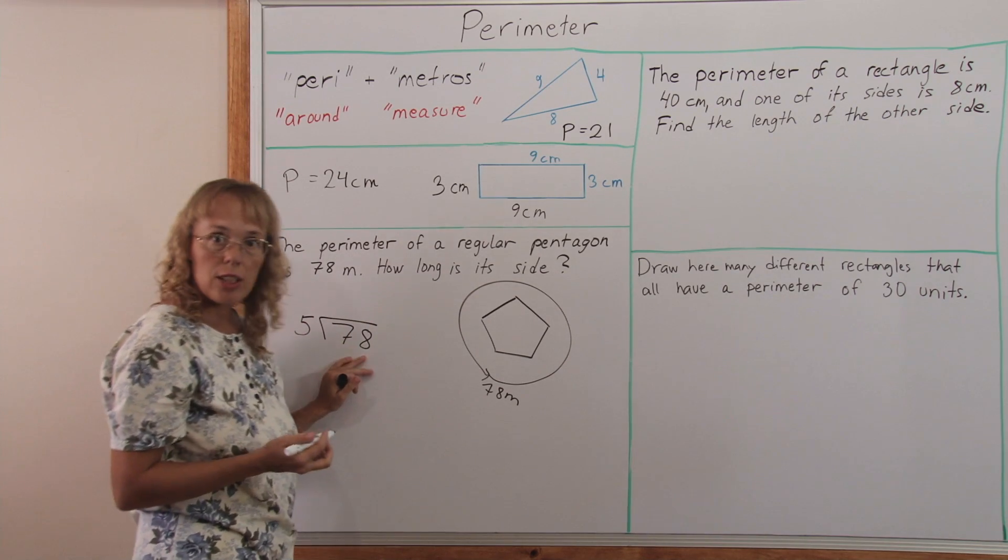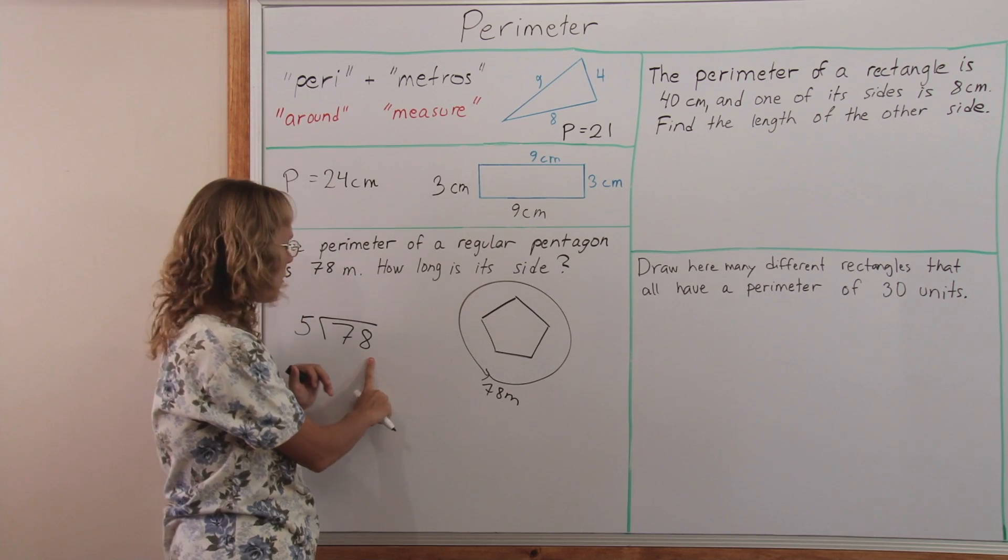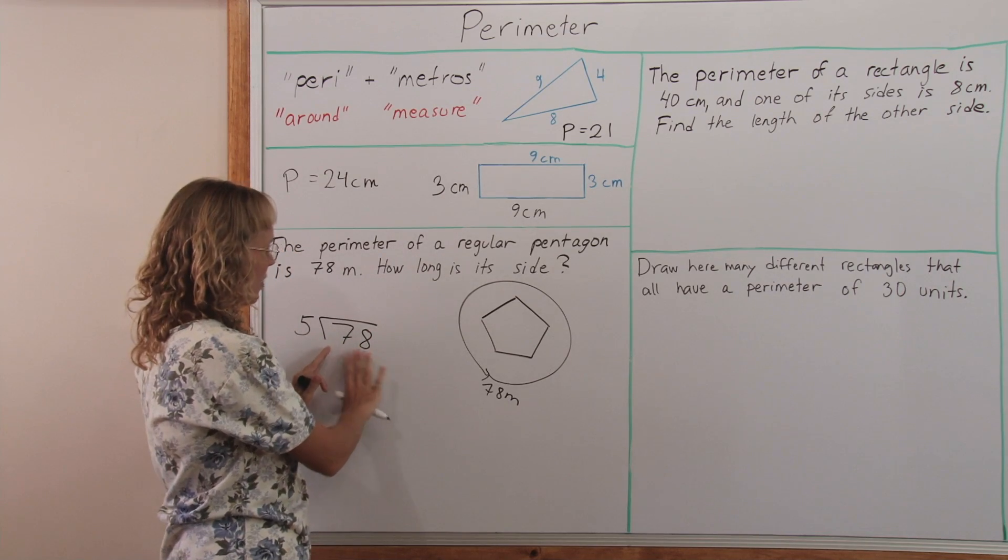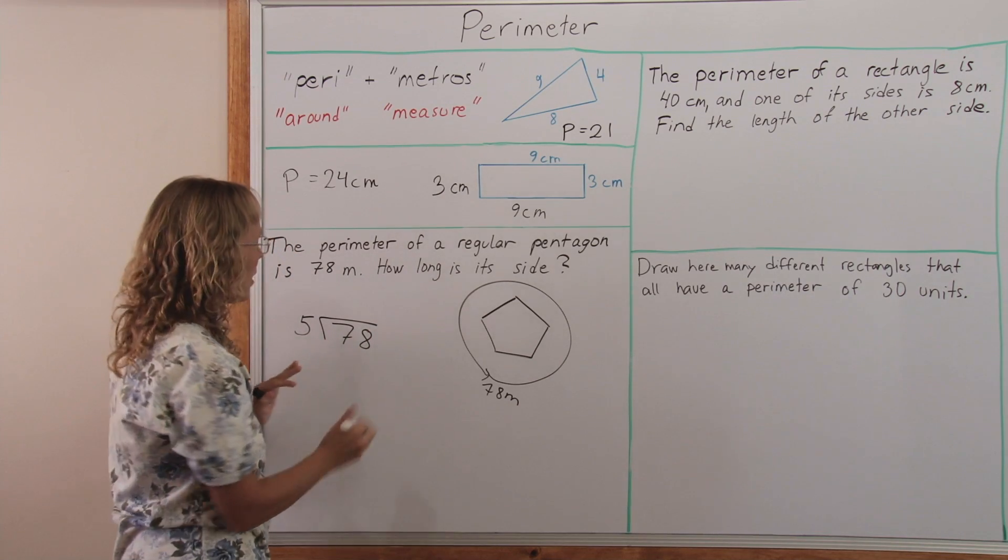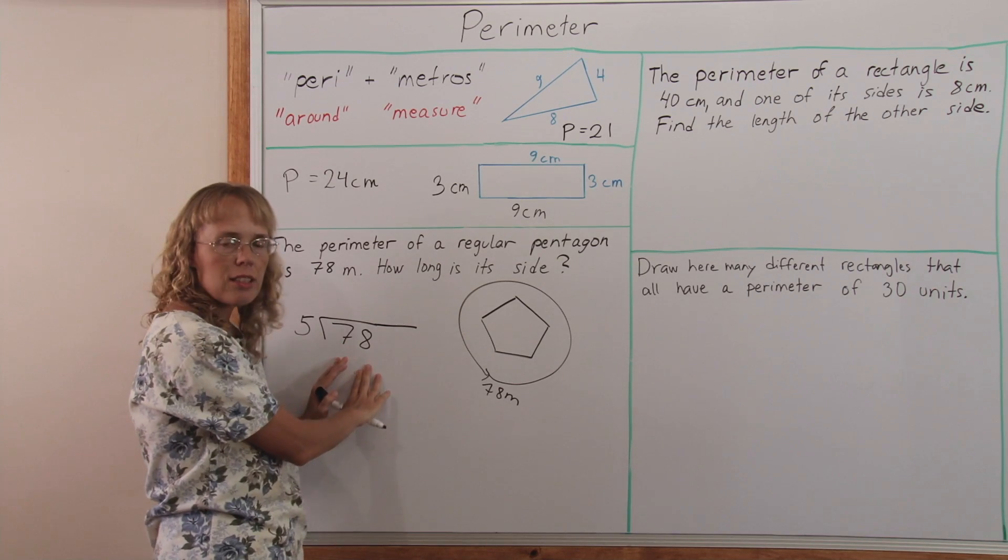Now, of course this number is not divisible by 5 because it doesn't end in 5 or 0. And maybe in your math book you would have an easy number like 70 or something.